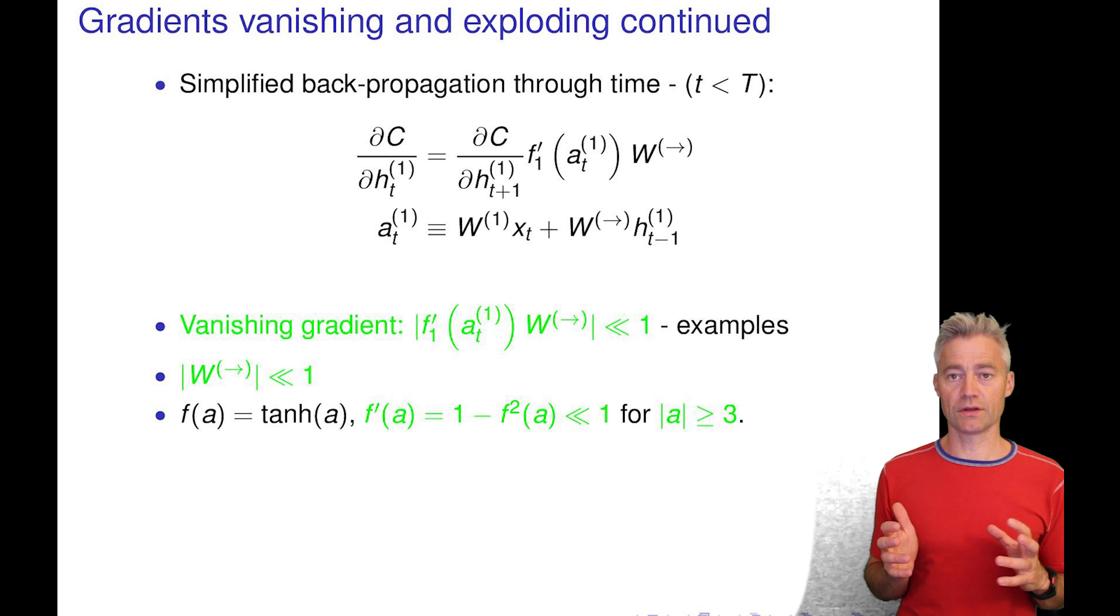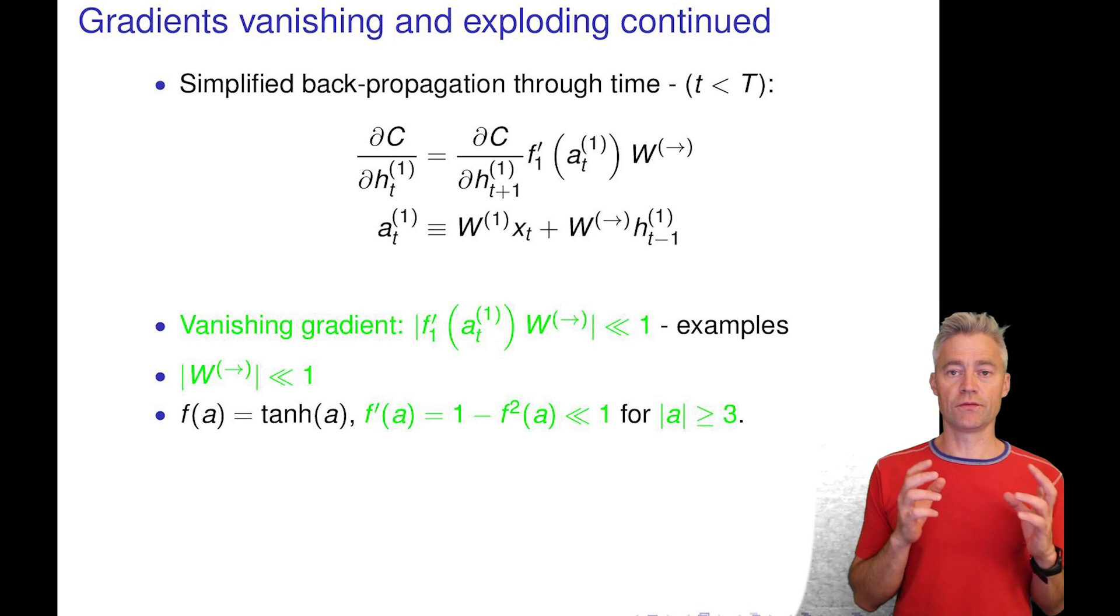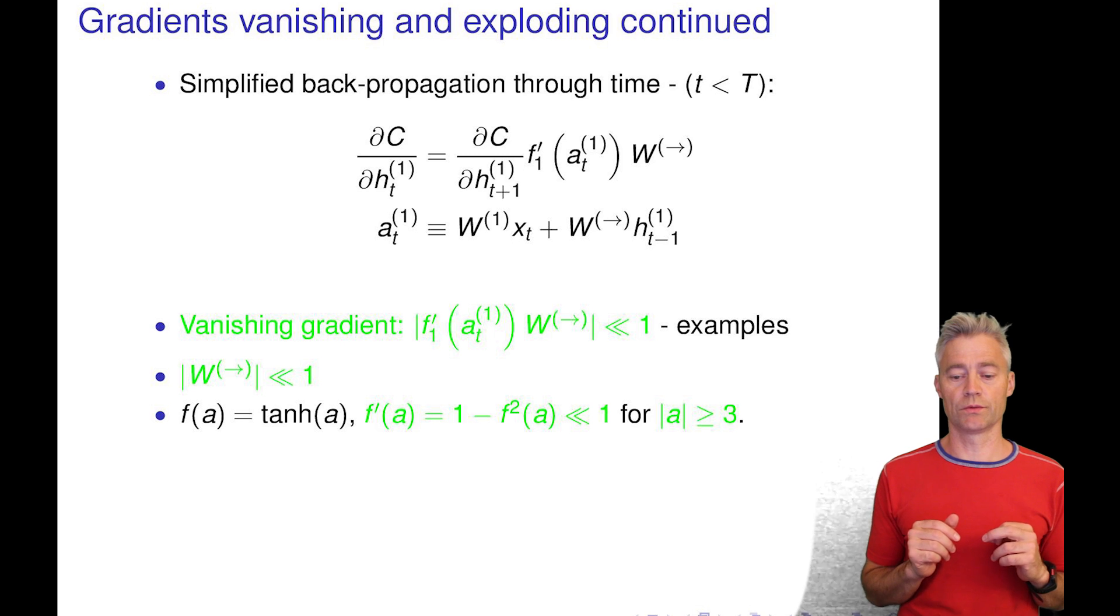So first vanishing is probably the most frequently occurring situation. And this can happen if the factor that we multiply in our recursion becomes numerically very small. So this could happen for example, so here I have written the expression, this could happen for example if the weight over time is very small, very close to zero numerically.